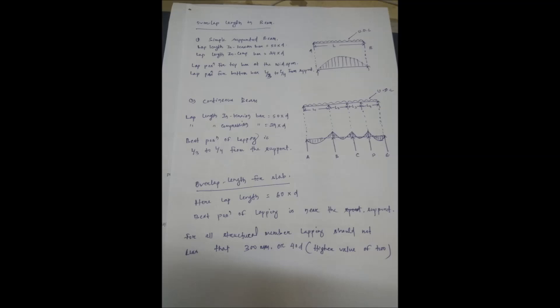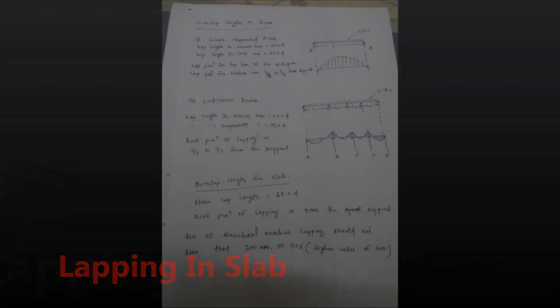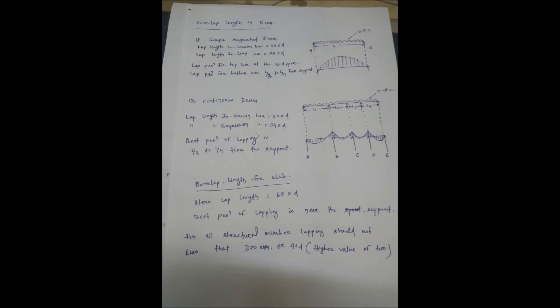Now comes to lapping of reinforcement in slab. Here lap length is equal to 60D, that is 60 times diameter of the bar. The best position of lapping is near the support.